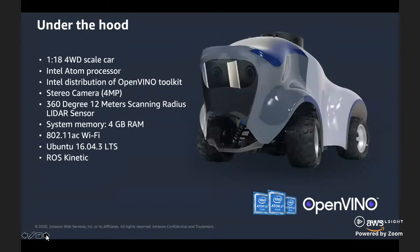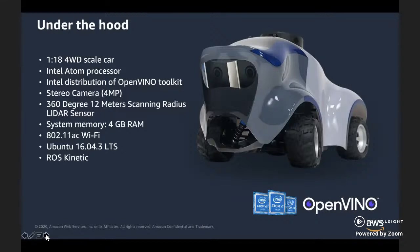We just launched DeepRacer Evo earlier this month. It expands the learning and racing capabilities with new sensors. The new sensors enable the car to detect objects — we swapped out a single camera for a stereo camera and added a light detection and ranging sensor, also known as LIDAR. These new sensors open up a new machine learning challenge to master and enable new racing formats because the car can now sense depths and objects.